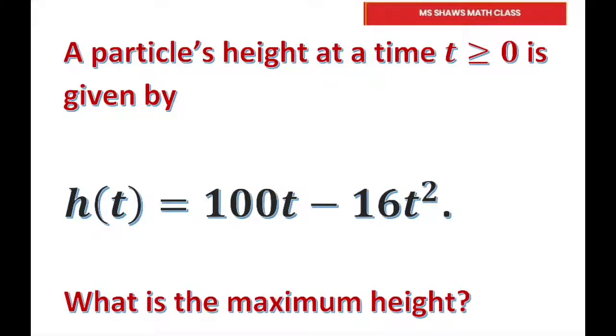Hi everyone. A particle's height at time t greater than or equal to zero is given by h(t) = 100t - 16t².